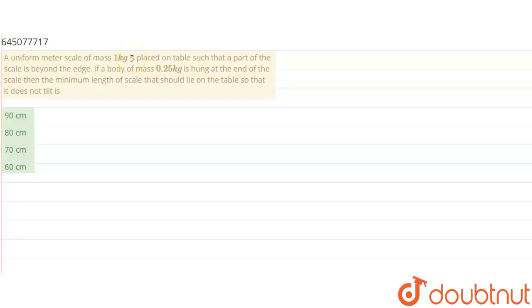Question is: A uniform meter scale of mass 1 kg is placed on the table such that a part of scale is beyond the edge. If a body of mass 0.25 kg is hung at the end of the scale, then what is the minimum length of scale that should lie on table so that it does not tilt? Let us draw a rough diagram here.